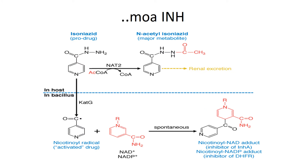Isoniazid in the bacillus is converted by CatG catalase peroxidase into nicotinoyl radical. This nicotinoyl radical binds with either NAD or NADP to form nicotinoyl NAD or nicotinoyl NADP adduct. The nicotinoyl NAD adduct inhibits mycolic acid synthesis, and the nicotinoyl NADP adduct inhibits dihydrofolate reductase enzyme.